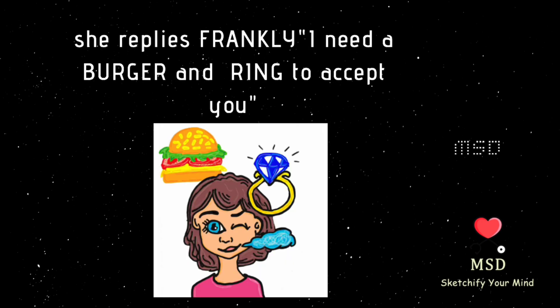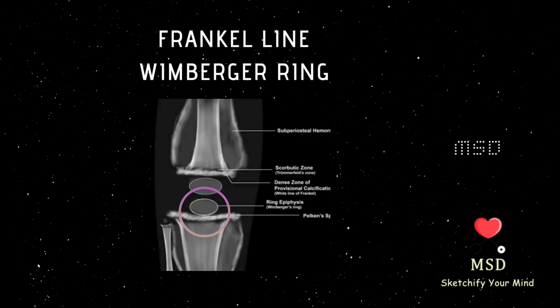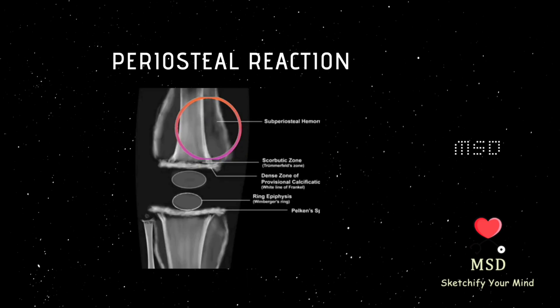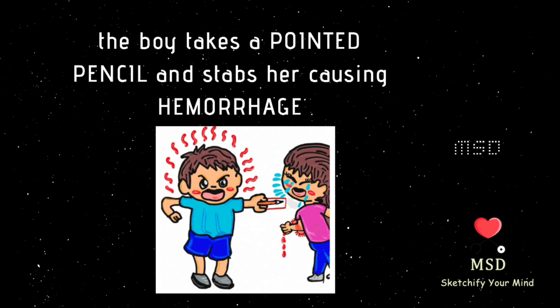She replies: 'Frankly, Frankel line, I need a burger and a ring to accept you' — Wimberger ring. On hearing this, the boy decides to react — periosteal reaction. He takes a pointed pencil and stabs her — pencil point cortex.